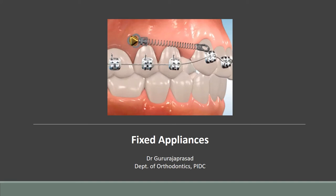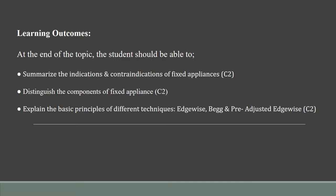Good morning and welcome to today's lecture on fixed appliances. In today's lecture we will be looking at the history of fixed appliances, what are fixed appliances, what are the indications and contraindications, and the various components used. We'll finish with examples of different types of appliances used in orthodontics. At the end of this topic you should be able to summarize the indications and contraindications, distinguish the various components, and explain the basic principles of different techniques such as edgewise, Begg, and pre-adjusted edgewise.